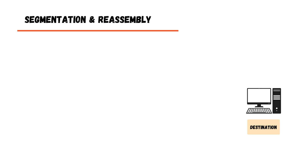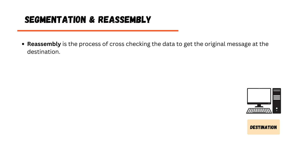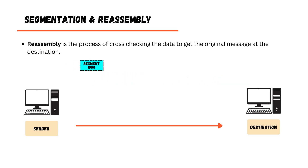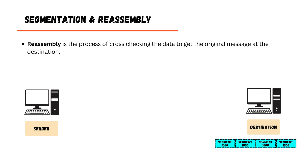Sequencing helps the receiver reassemble the data correctly. The reassembly process is always performed at the destination. TCP reassembly is the process of reconstructing the original data stream from the received segments. In our example, all four segments of 1000 bytes arrive at the destination, each carrying 1000 sequence numbers, and they are reordered and reattached in sequence to reconstruct the original 4000-byte data.